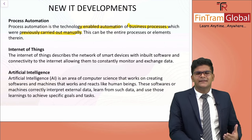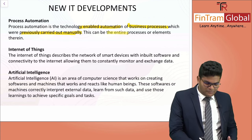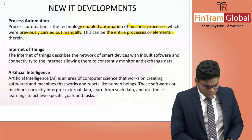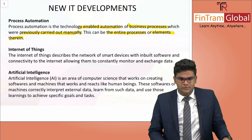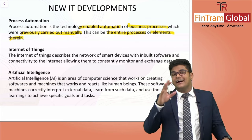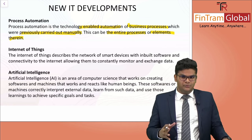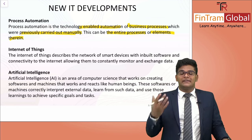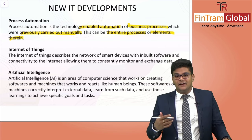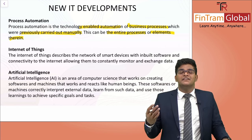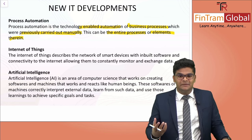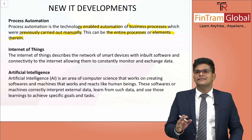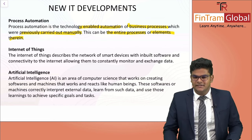Process automation can apply to the entire process itself or to elements within it. We cannot automate the entire inventory management on its own — for example, a software can point out whether inventory is running out, but the physical movement of inventory still requires manual labor. So that's basically what process automation is all about.